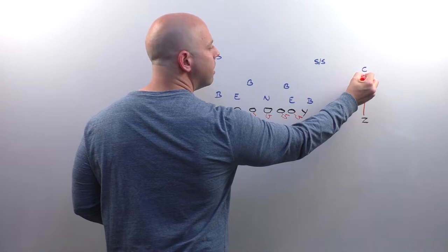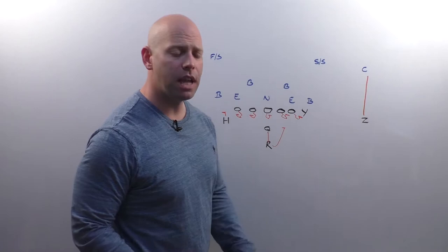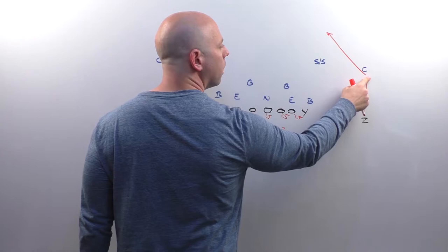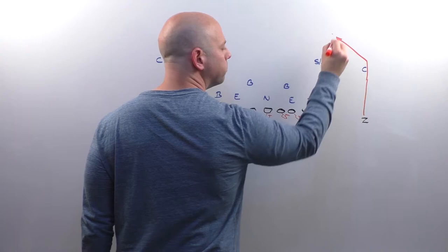Quarterback in a five-step, R checking to the right. We're going to run a seven-step post. Okay, start with the outside foot back. He's going to get to the seventh step. On the seventh step, he should be stepping with that outside foot again and then driving to the near upright. We really want this ball thrown. It's actually going to be a deeper route than that. We really want this ball thrown off the break.